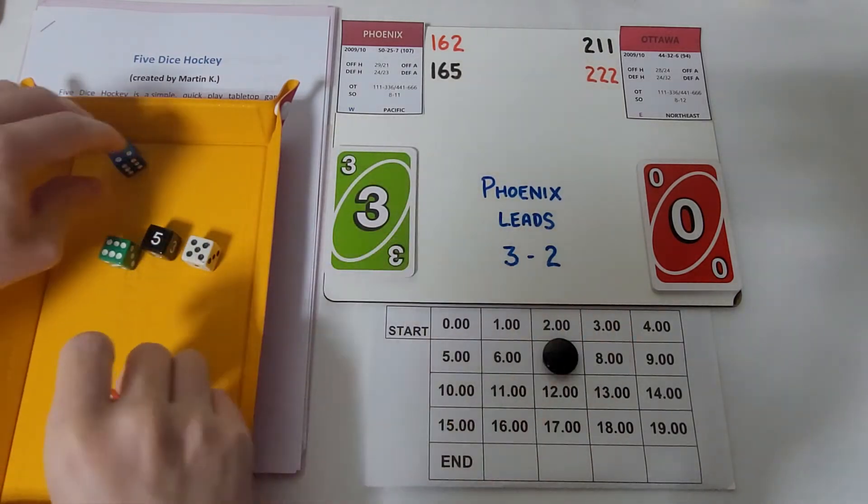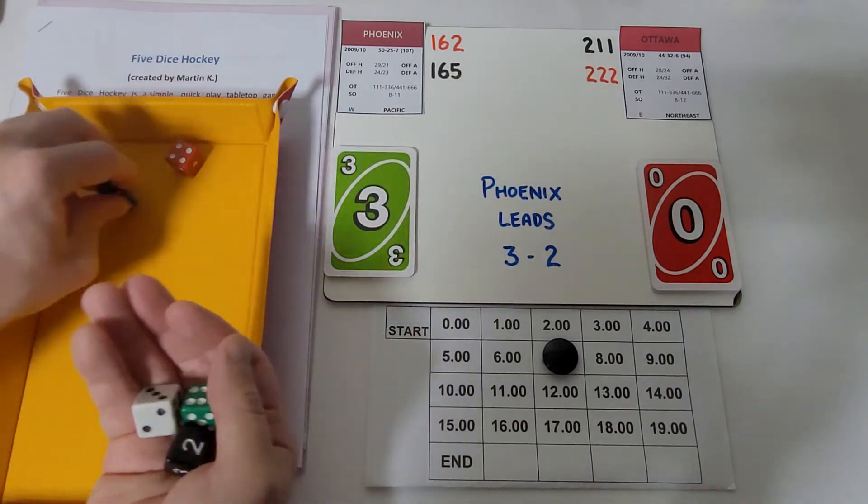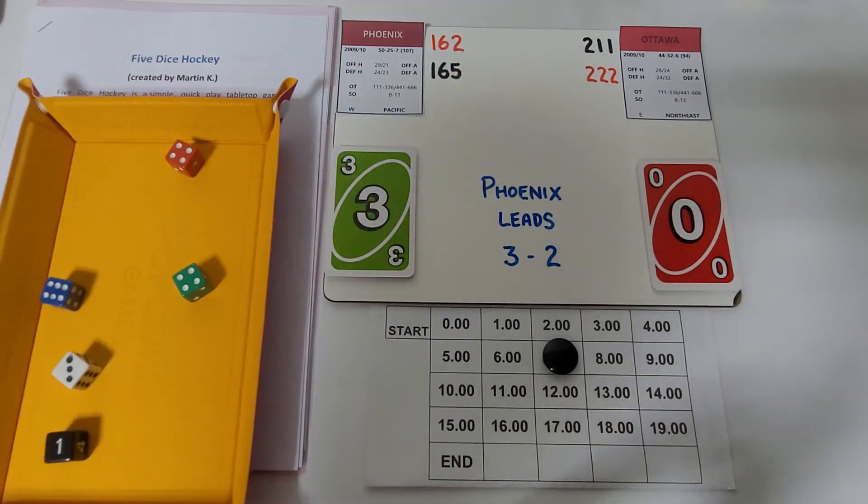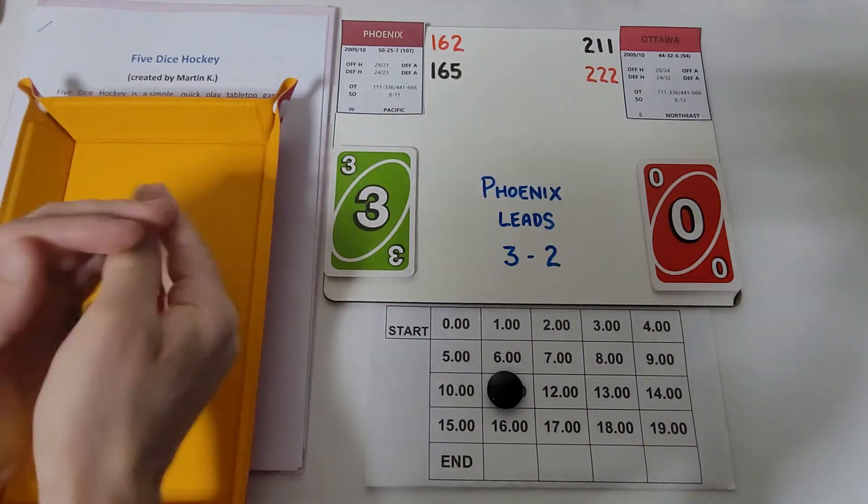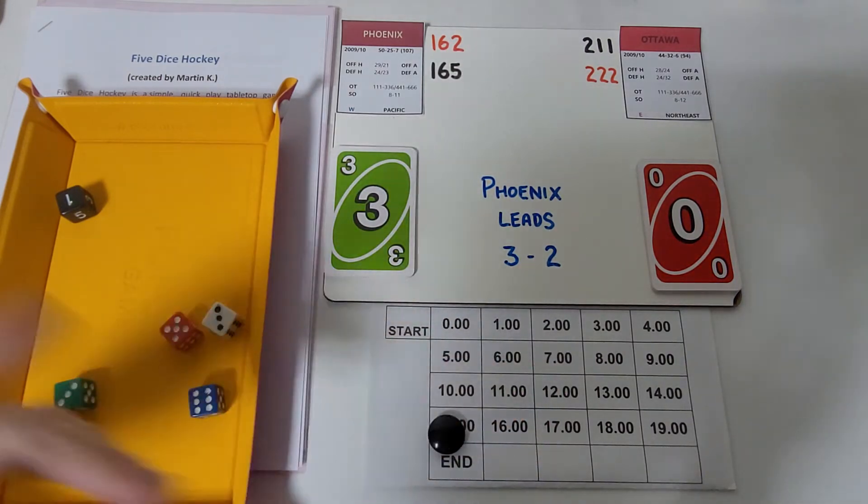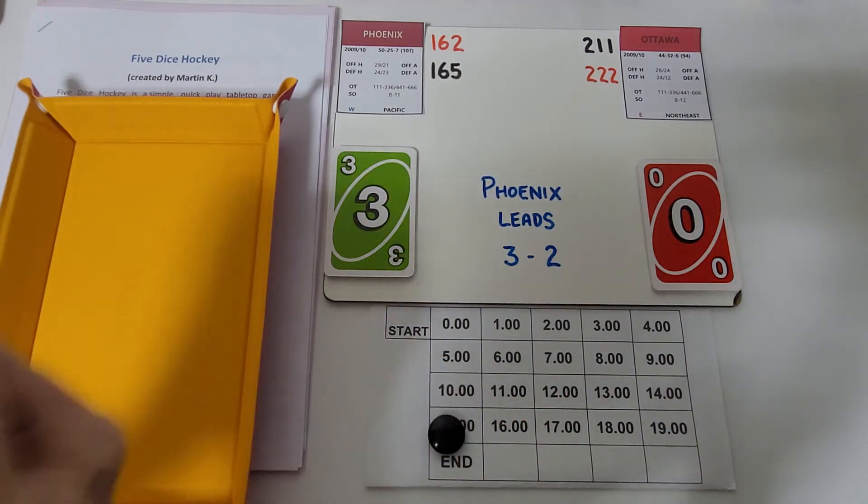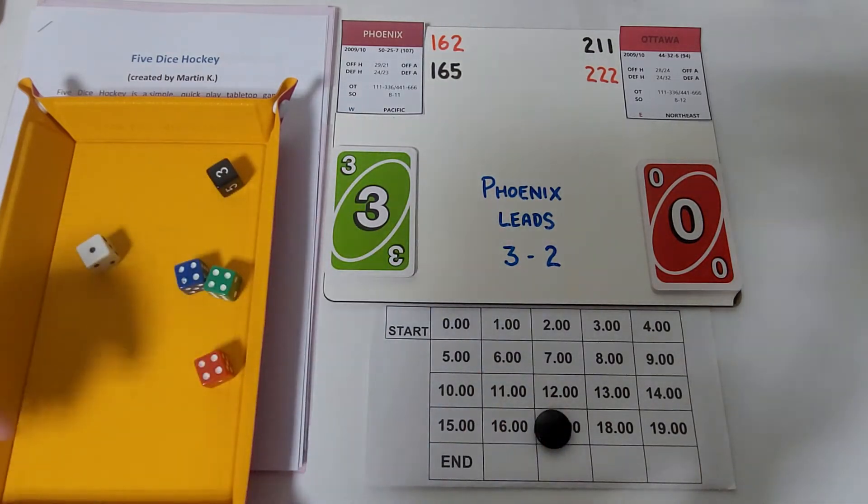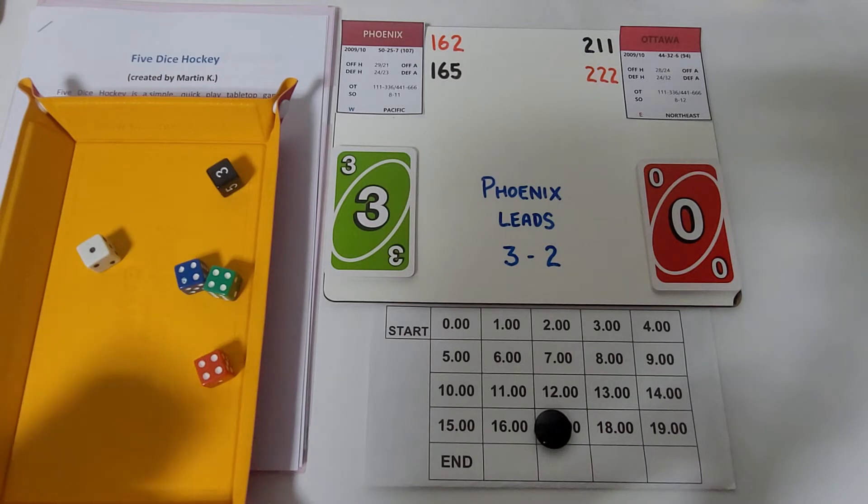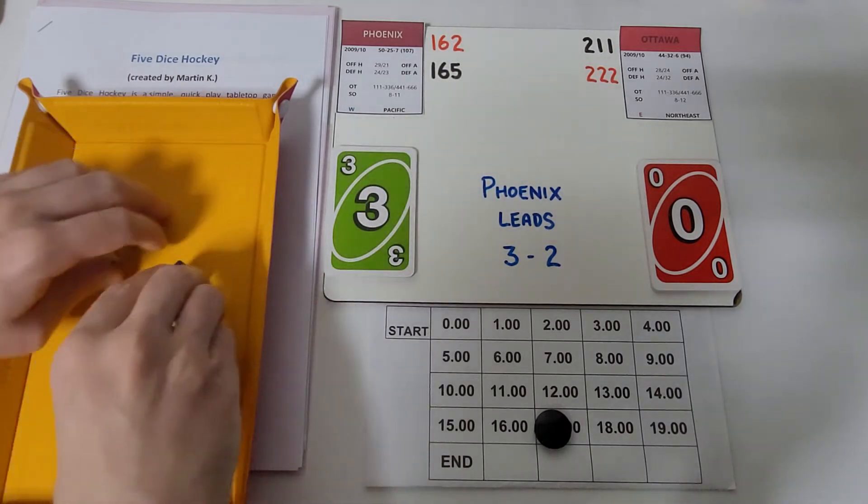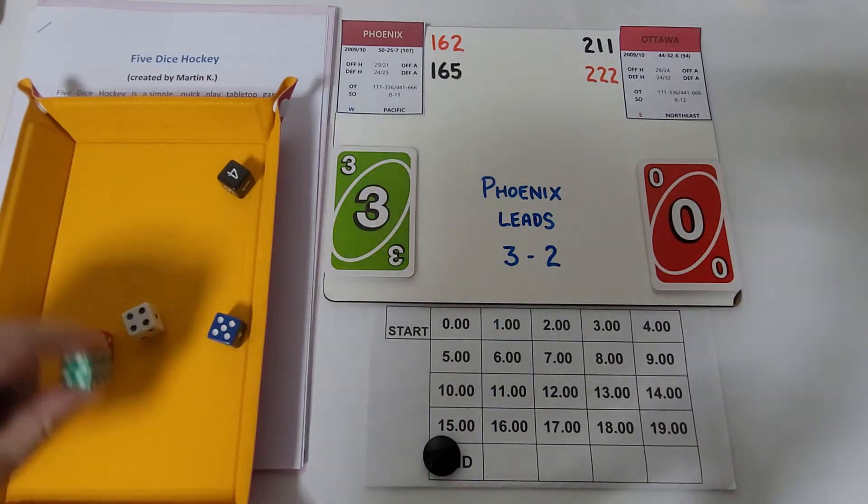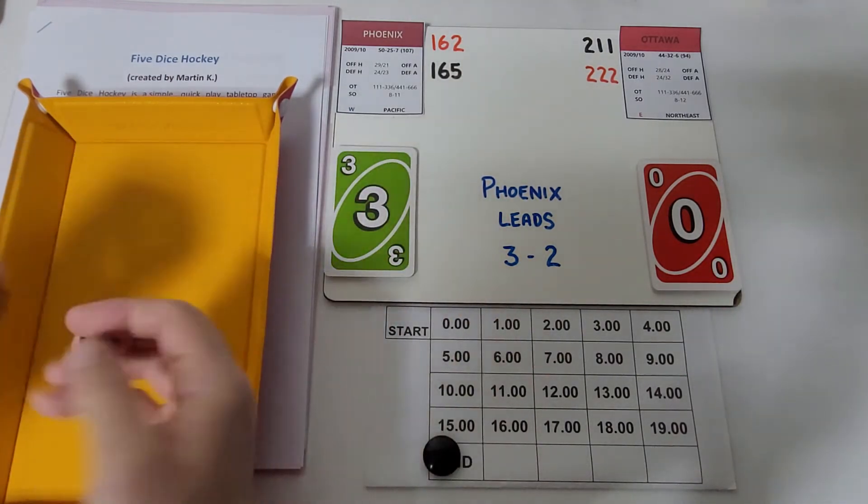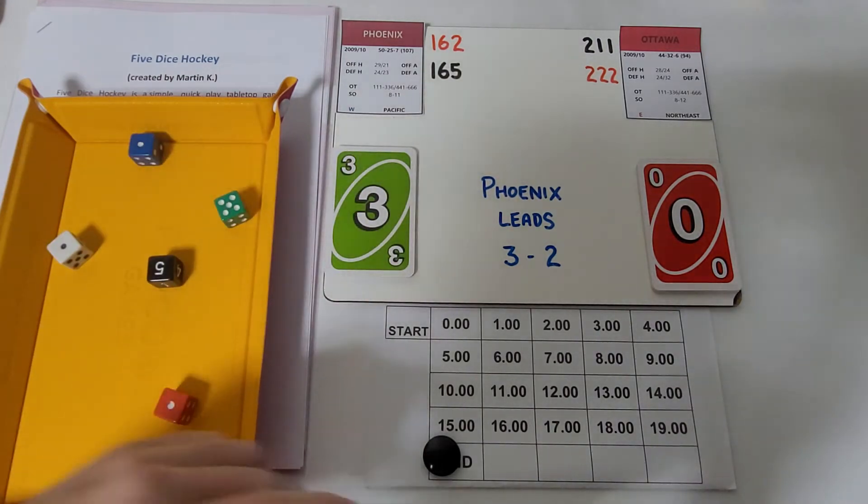Two minutes into the second period now with another green three. Three more off the clock, up to minute five here in period two. Phoenix is up three nothing. I don't envy Ottawa trying to score at least thrice on Bryzgalov. Two more minutes coming off the clock, now up to minute seven. We have another turnover with a 655.